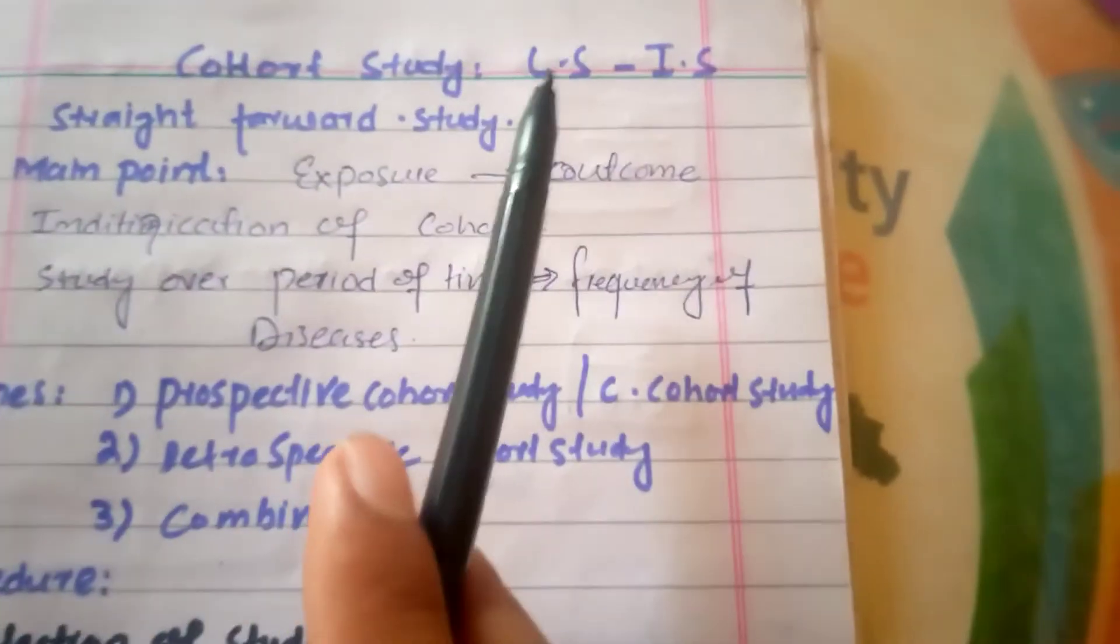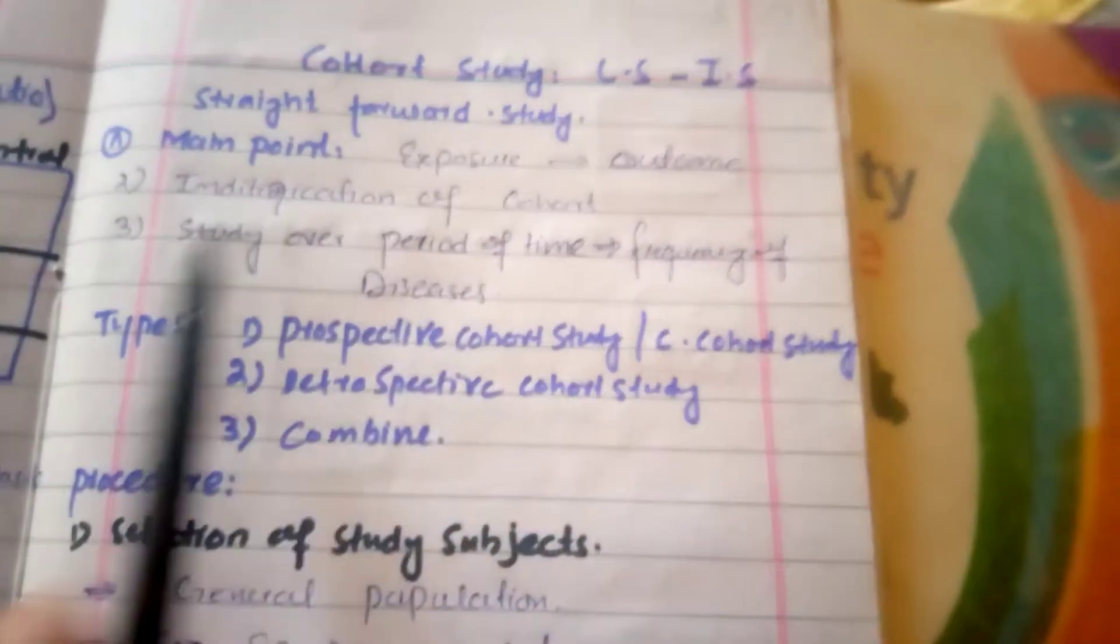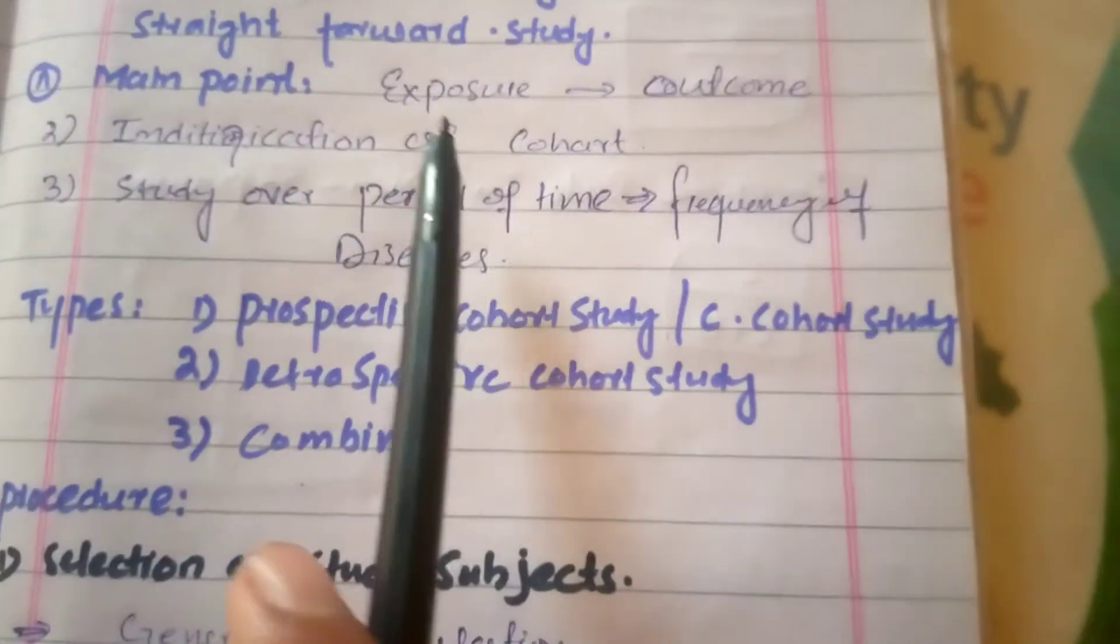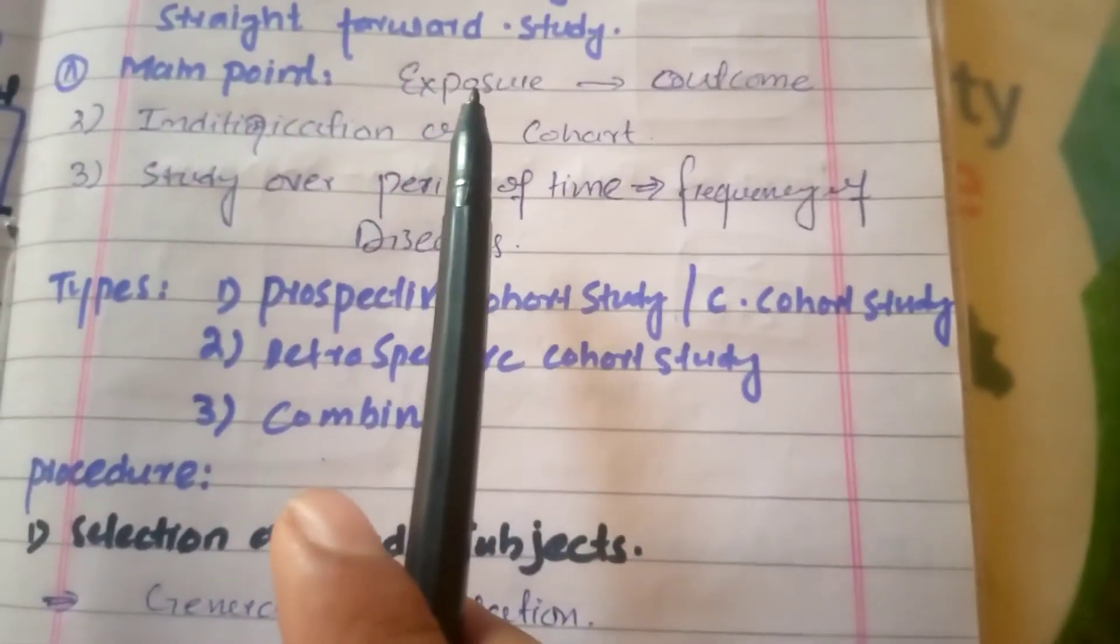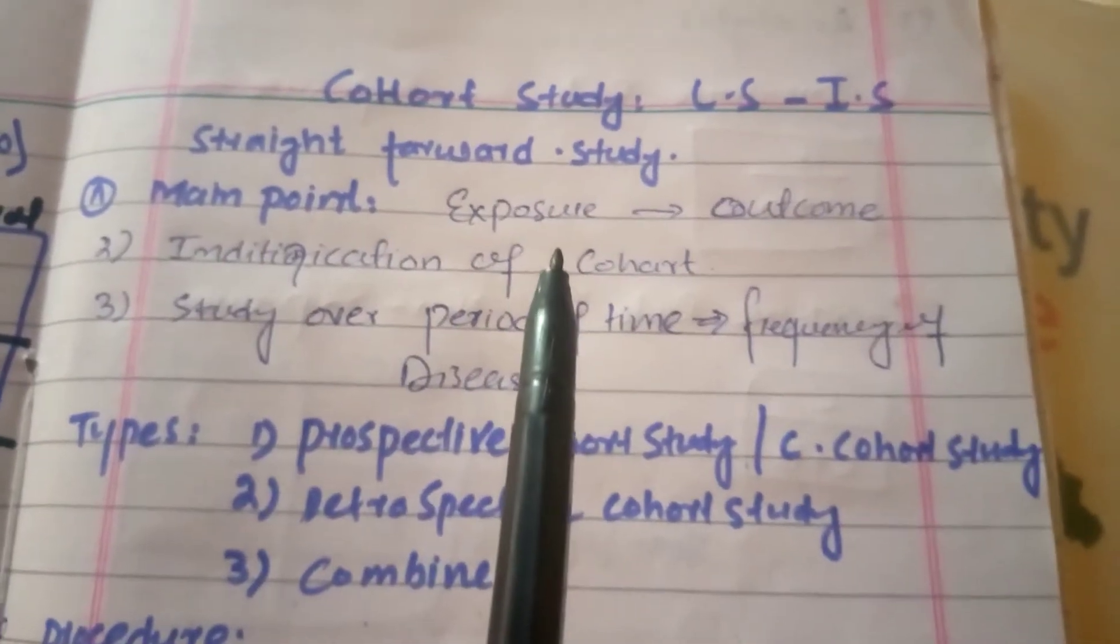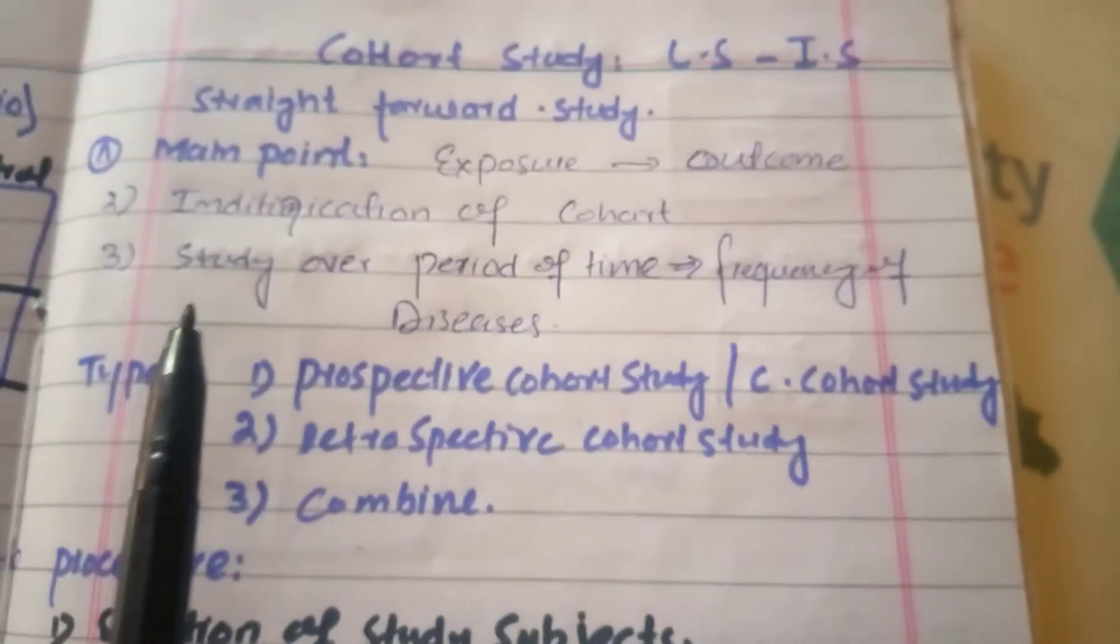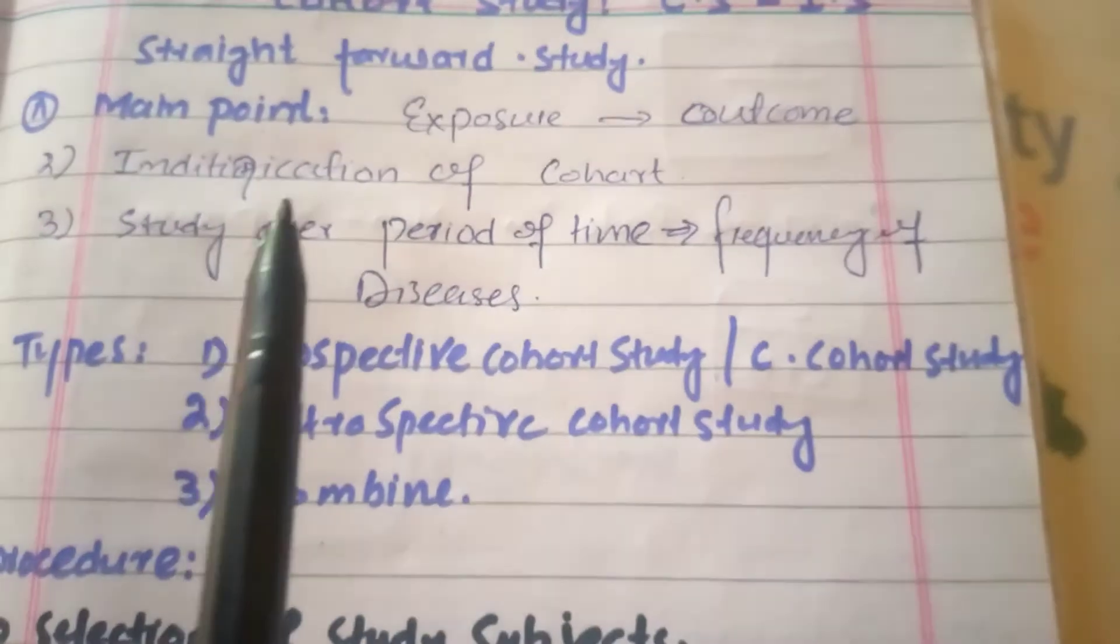Cohort study is also called longitudinal study, incident study, and straightforward study. The main point is that in this study, we are going to go to the outcome opposite to the case control study. The identification of cohort we have to do before. Cohort study will be the study over a period of time.